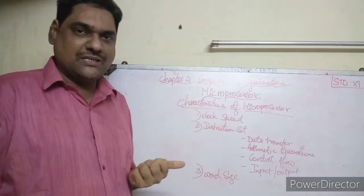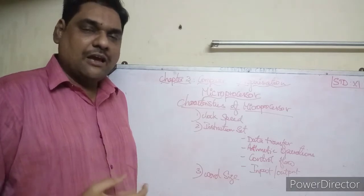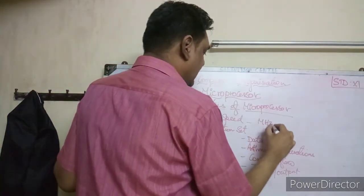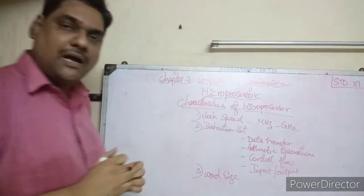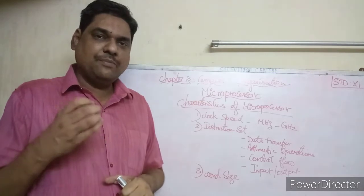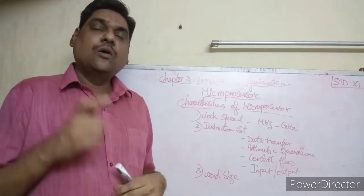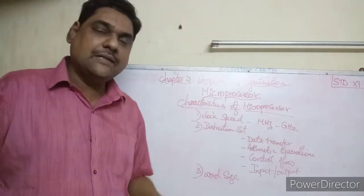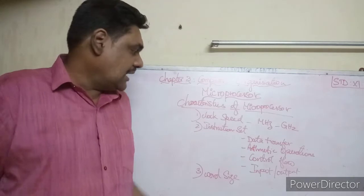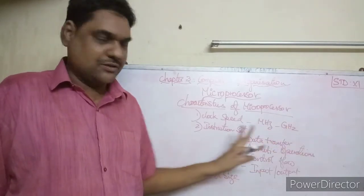The three main characteristics of the microprocessor are: clock speed, instruction set, and word size. Clock speed refers to the speed at which the microprocessor operates. The faster the clock speed, the faster it executes instructions. Clock speed is generally measured in megahertz (MHz) and gigahertz (GHz).